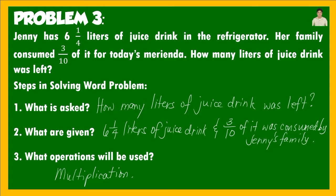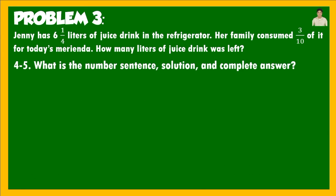Since the question asks how many liters were left, we also need to use subtraction. The number sentence is: 6 and 1 fourth minus (3/10 × 6 and 1 fourth) = n. We subtract the amount consumed from the total. First, we need to convert 6 and 1 fourth into an improper fraction: 6 × 4 = 24, plus 1 = 25 over 4.